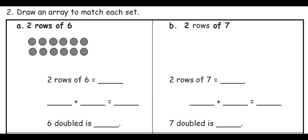In the next section, we're going to look at arrays that make doubles. The first one shows us two rows of 6, and it asks for the total. Two rows of 6 equals blank.